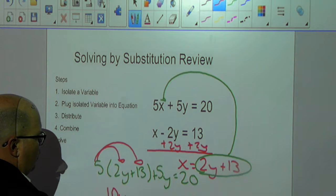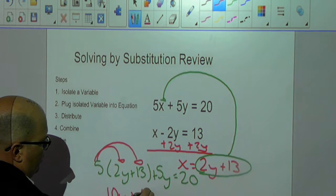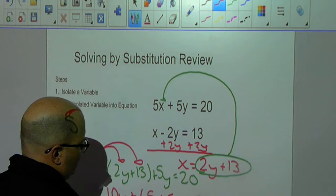I'm going to have 10y plus 65 plus 5y equals 20.